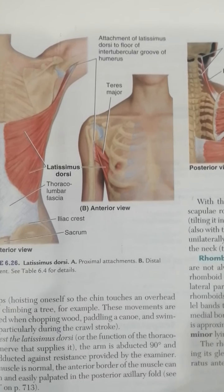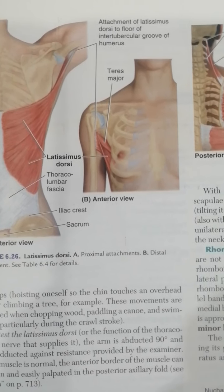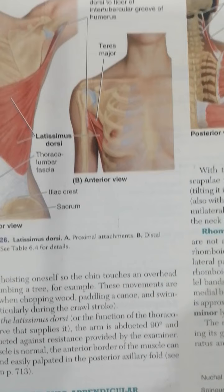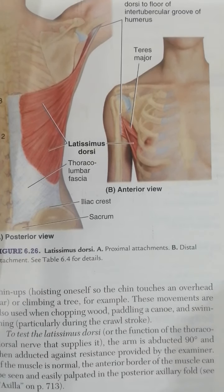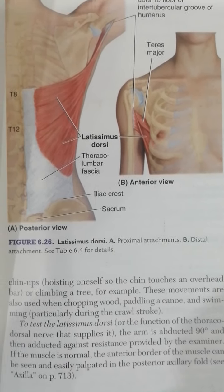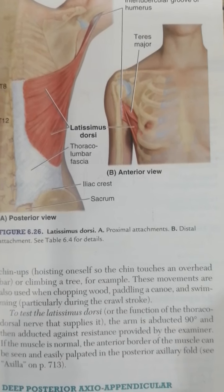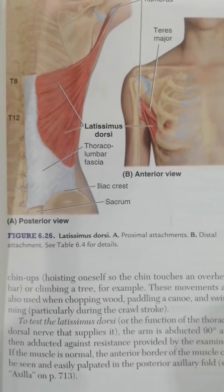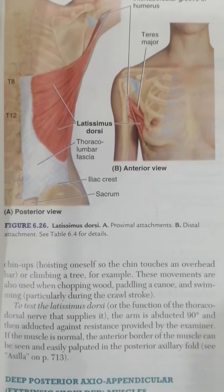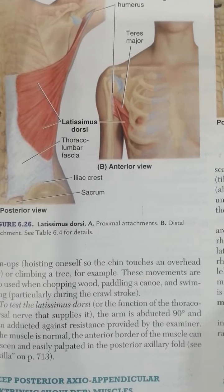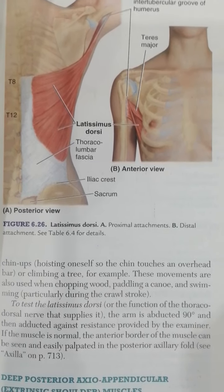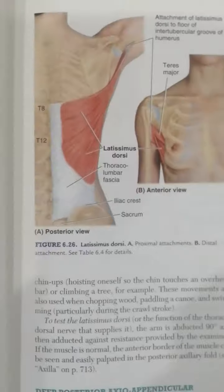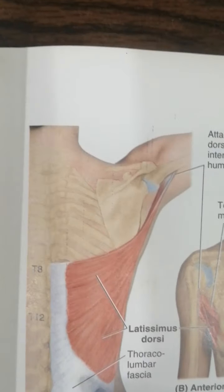Latissimus dorsi is a large fan-shaped muscle — its name means the widest back muscle, as it covers a wide area of the back. It acts directly on the glenohumeral joint and indirectly on the pectoral girdle. Whenever it contracts, it causes extension, retraction, and medial rotation of the humerus. In combination with pectoralis major, it is a powerful adductor of the humerus and plays a major role in downward rotation of the scapula. It is useful in restoring the upper limb from abduction, making it important in climbing, chin-ups, and swimming — hence it is known as the climber's, chin-up, or swimmer's muscle.